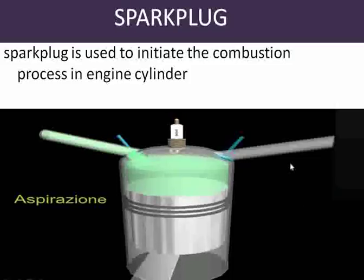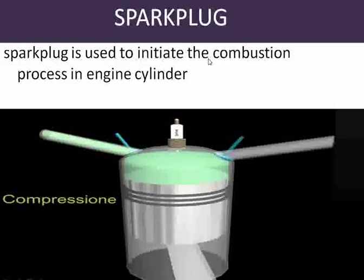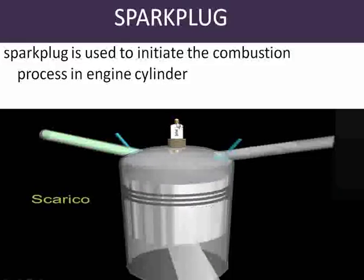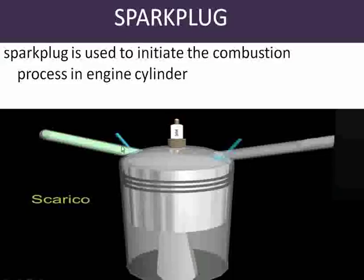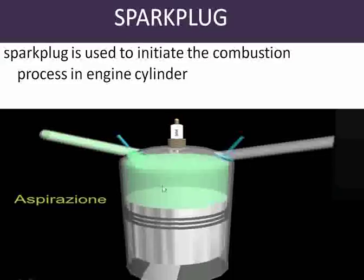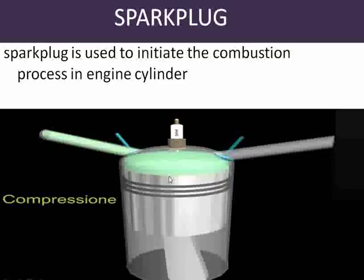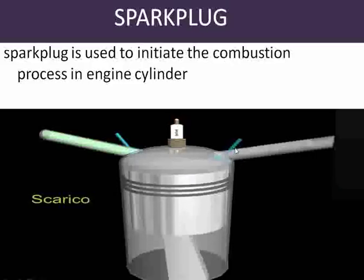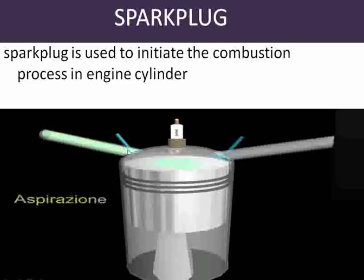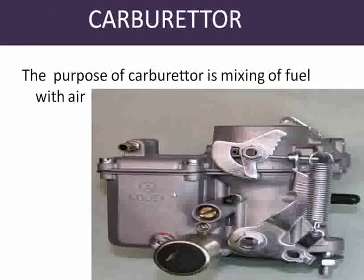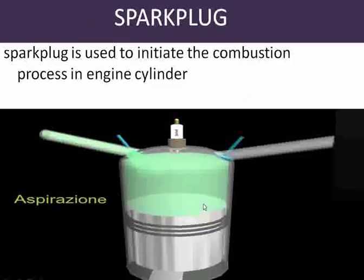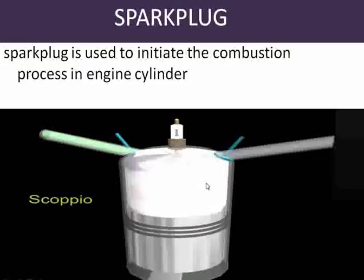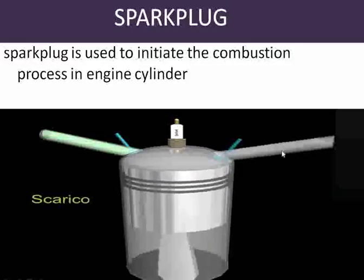Our next part is the spark plug. The spark plug is used to initiate the combustion process in the engine cylinder. Here you see the white part is the spark plug. There is the intake valve where fuel comes in, the spark plug initiates combustion, and the exhaust valve lets the exhaust come out.